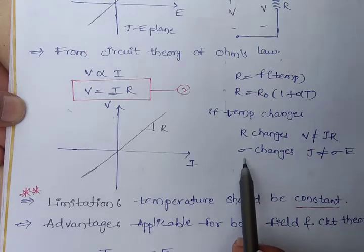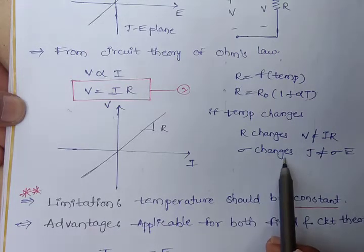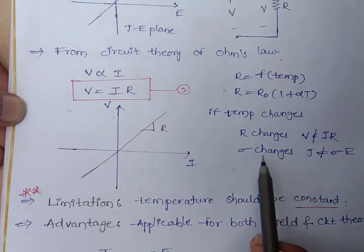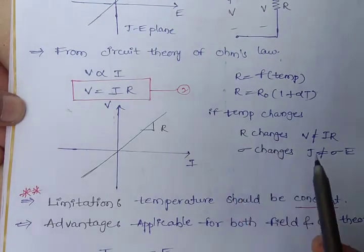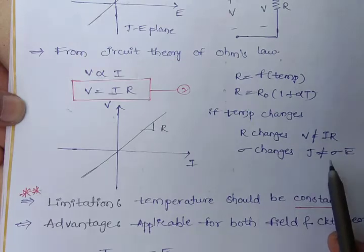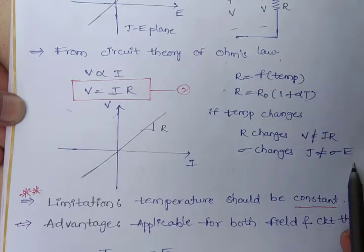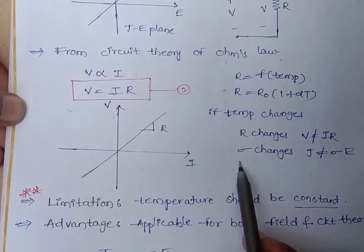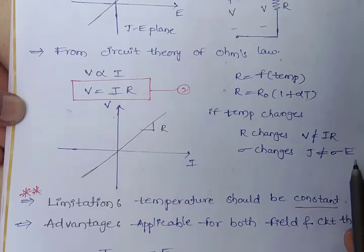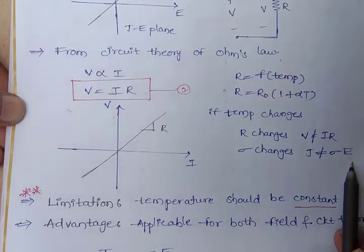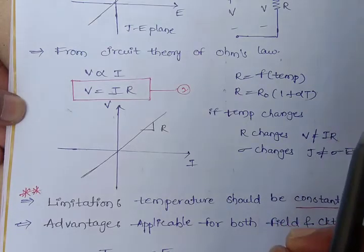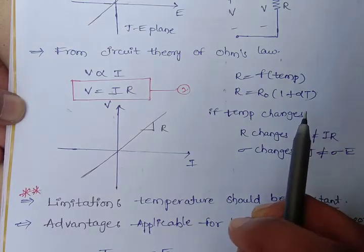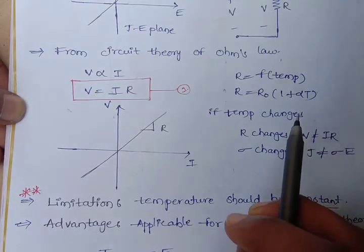Similarly, with the field theory of Ohm's law, sigma changes when temperature changes — then J is not equal to sigma E. That means for Ohm's law, temperature must and should be constant.